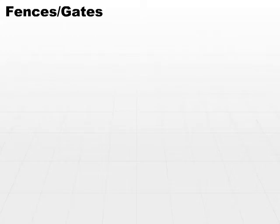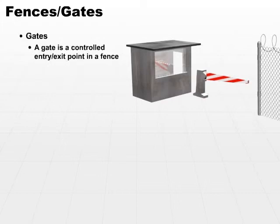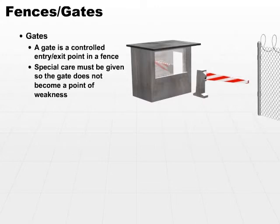Every fence has to have an opening, and that opening is a gate. A gate is a controlled entry and exit point in a fence. You have to take care to make sure that the gate does not become a point of weakness.